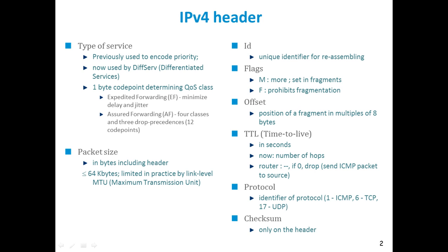The next field is time to live. It is generally measured in seconds, with a count of around 255, or it can be measured in hops. By default, time to live in a wired network is 255 milliseconds, and in terms of number of hops it is set as 64. Once a router receives a packet, this count is decreased, and if a packet reaches zero, the router drops the packet.